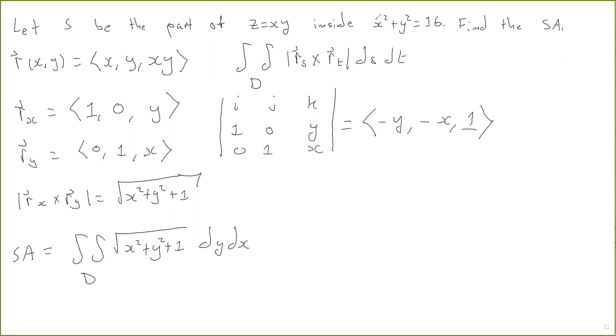Now the parameter domain D, this is a disk of radius 4 centered at the origin. So now this right here is a two-dimensional integral. This is just a normal two-dimensional integral. Okay, we're integrating over the parameter domain, which is X squared plus Y squared is less than or equal to 16. So we're just going to switch to polar coordinates.